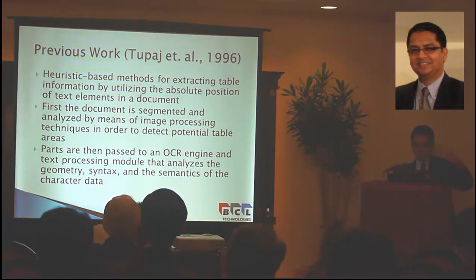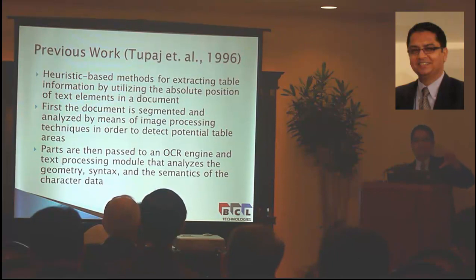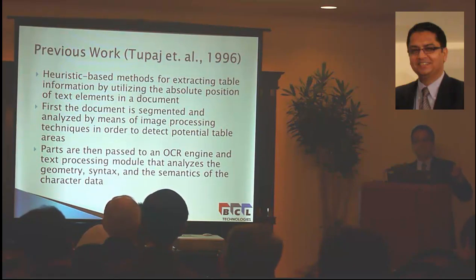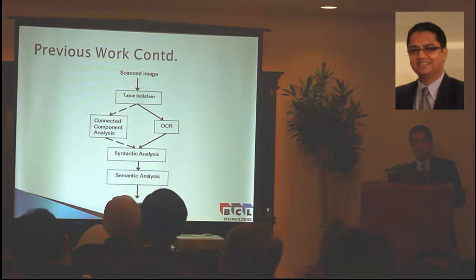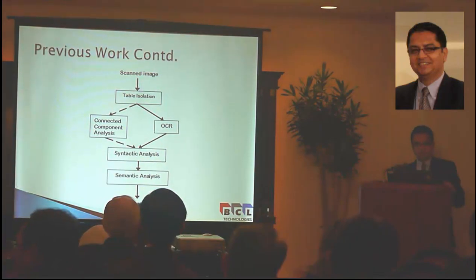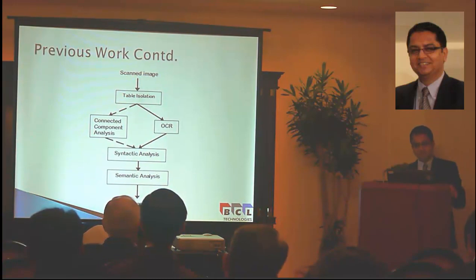We used the absolute positioning of text elements in a document. The document is segmented and analyzed by means of image processing techniques to detect potential tables. Those parts are then passed on to the OCR engine and a text processing module that has linguistic processing components — syntactic and semantic. We analyze the text and try to understand the content of the table. This is the architecture of that previous work: we have a scanned image, table isolation heuristics, then OCR, linguistic analysis, and then we decide whether this is a table. This was our 1996 work on table extraction.